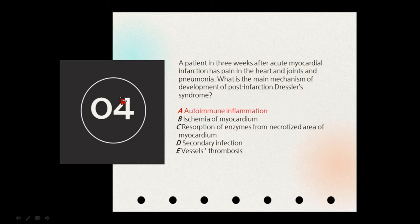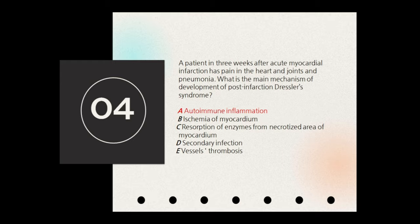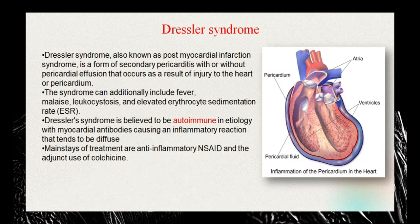The next question is about the heart. A patient three weeks after acute myocardial infarction has pain in the heart and joints and pneumonia. The question asks for the mechanism of development of post-infarction Dressler syndrome. Myocardial infarction is the death of cardiac tissue due to oxygen deprivation caused by compromised blood supply — for example, thrombosis of a coronary artery blocking part of the heart's blood supply, leading to tissue necrosis.